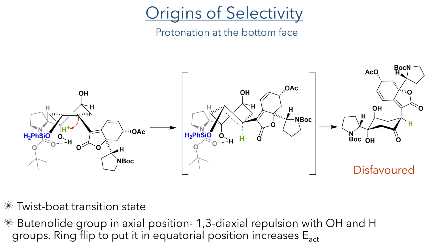Alternatively, protonating the intermediate at the bottom face produces a twist-boat transition state with a higher energy than its chair conformation alternative. The twist-boat conformation produces a product with the butenolide group in an axial position, which has unfavourable 1,3-diaxial interactions. While the cyclohexane ring can undergo a ring flip to put the butenolide group in an equatorial conformation, it has a high activation energy and this poses a barrier for this reaction pathway.